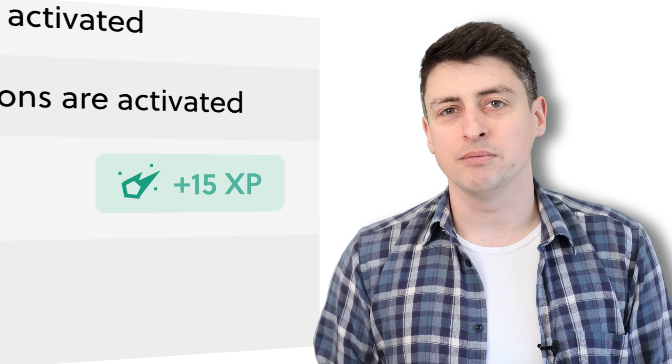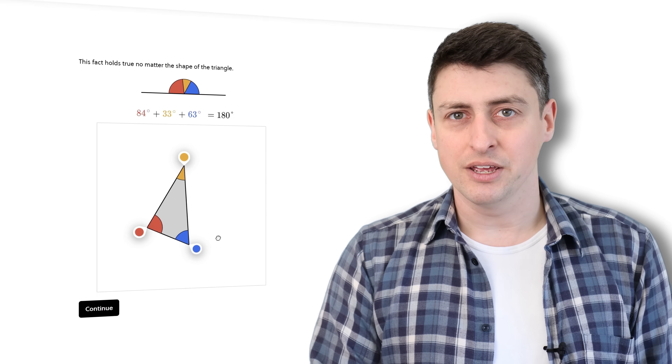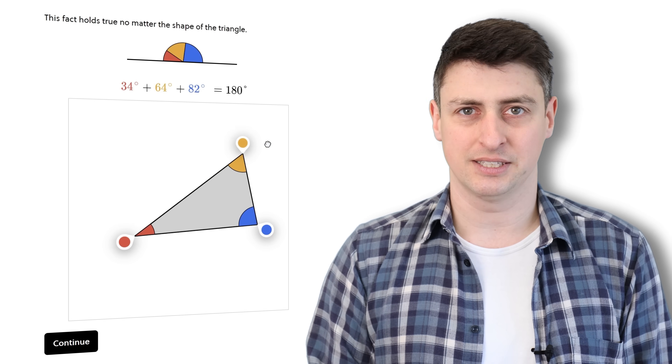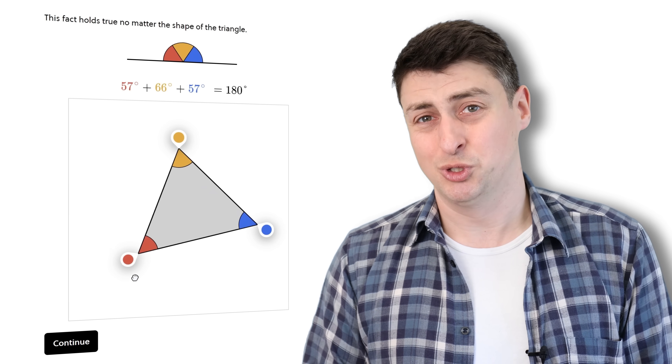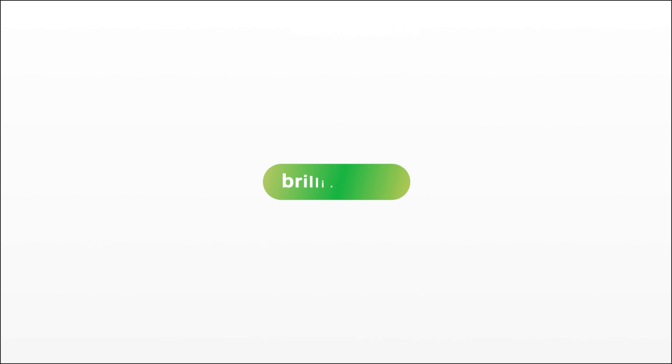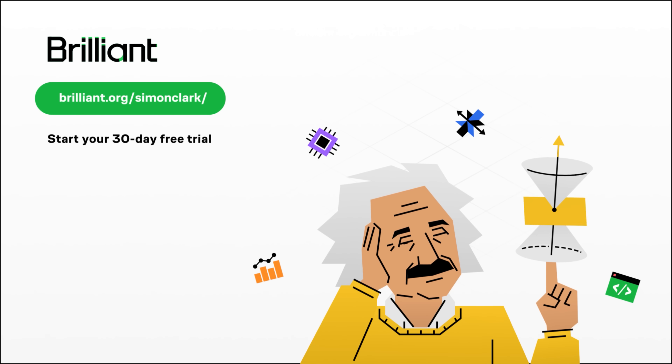Invest five minutes a day in yourself, because while you may be learning about large language models, algebra, or group theory, really you're improving your critical thinking skills. And that's a much better use of your time than just doom scrolling. Brilliant have been a long-term supporter of this channel, and if you haven't tried them out yet, why not give them a go? Because it's free. To try everything Brilliant has to offer for free for a full 30 days, visit brilliant.org/SimonClark, linked in the description.